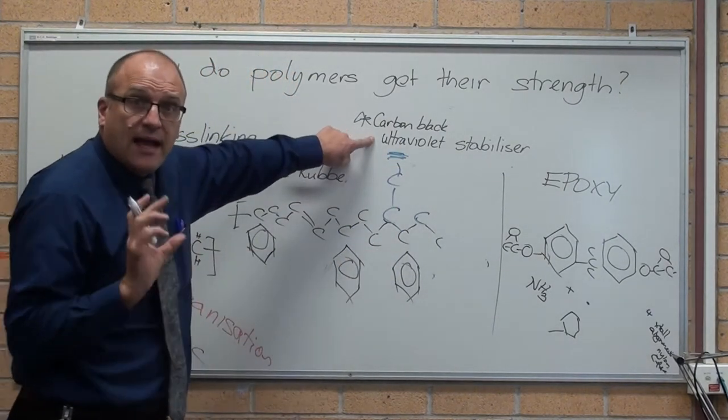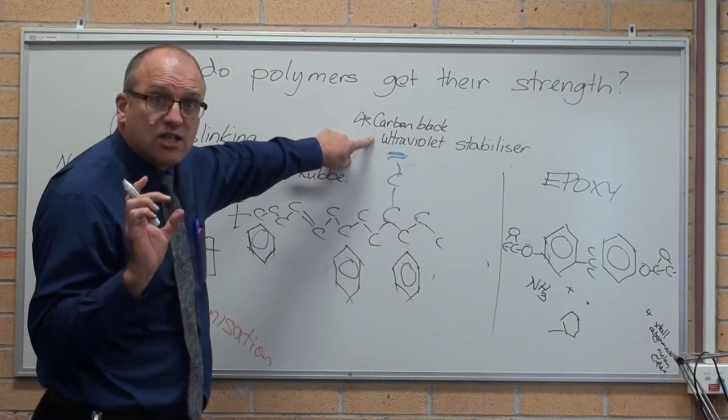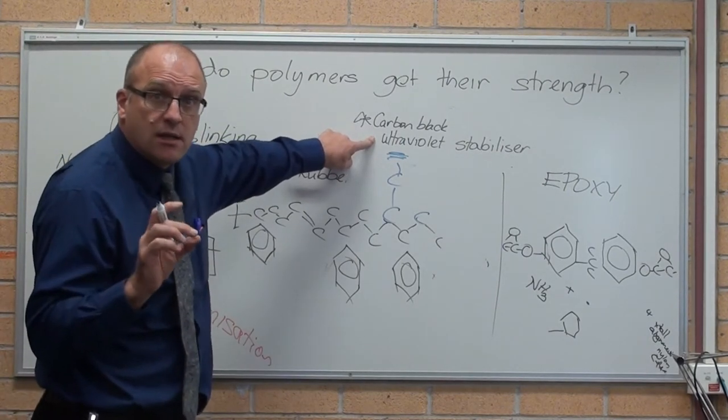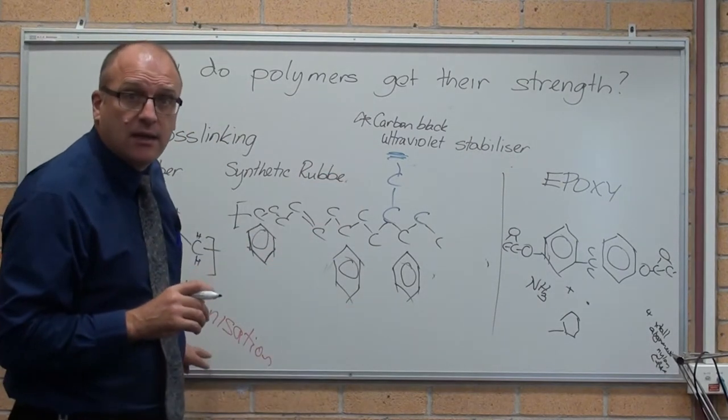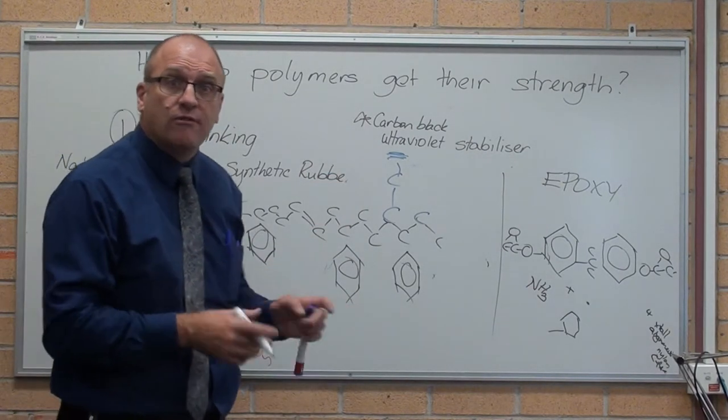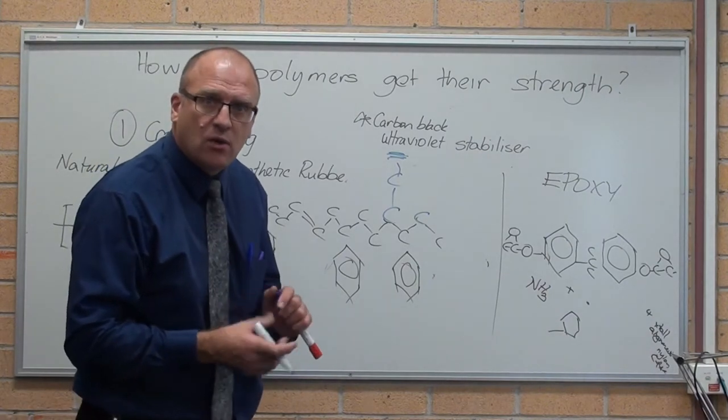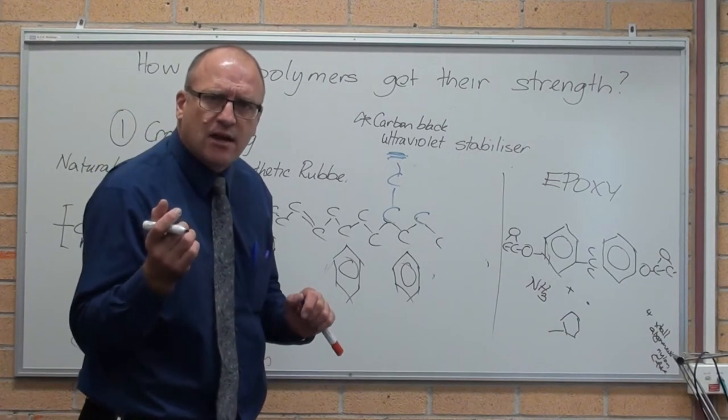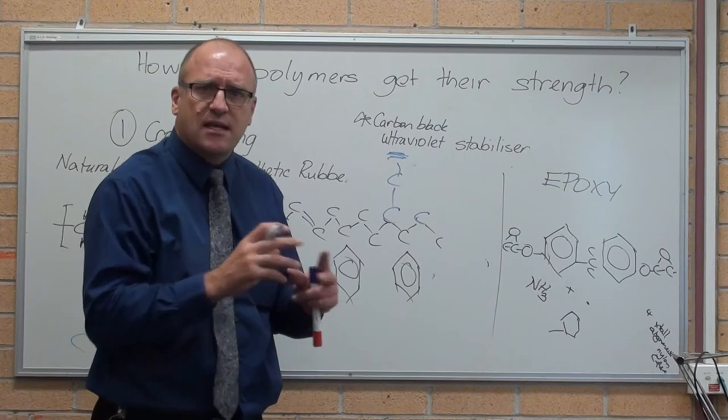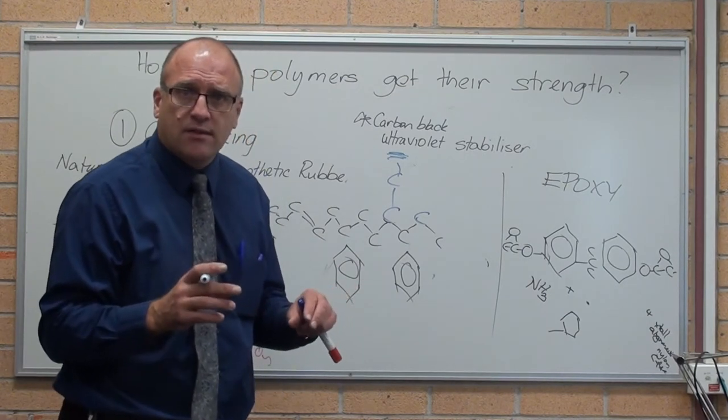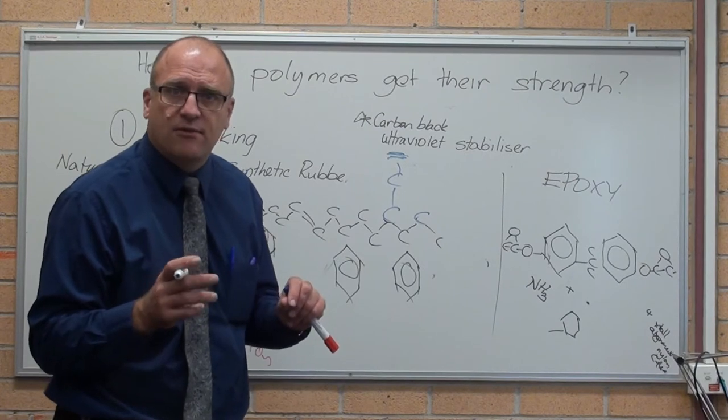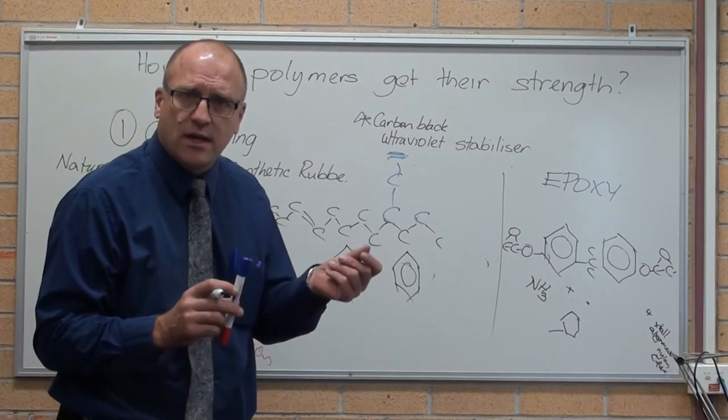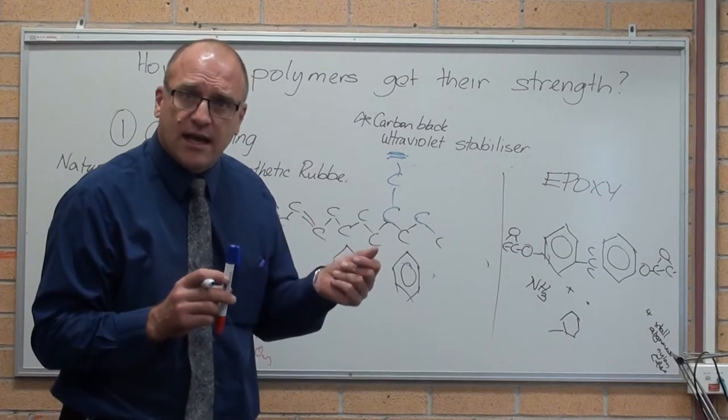I've got here, they add carbon black and ultraviolet stabilisers, to tyres. As well as the sulphur and the oxygen attacking the double bonds, ultraviolet light breaks them down as well. So sunlight breaks down natural rubber, turns it into a sticky gooey mess, like that pencil eraser you found in your pencil case after ten years, or the back of your drawer at home after ten years. It's just a sticky gooey mess due to oxidation.